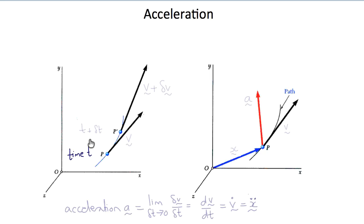Now we can define acceleration. Again, at time t we have point P, and at time t plus delta t the velocity vector at time t is v and at time t plus delta t is v plus delta v. The position vector is little x at P and the velocity vector is v, so the acceleration vector a is the limit as delta t tends to zero of delta v over delta t, which is dv/dt or v dot or x double dot. For this motion, the acceleration vector is shown in red. Note that the acceleration vector has components tangent to the motion and normal to the motion.